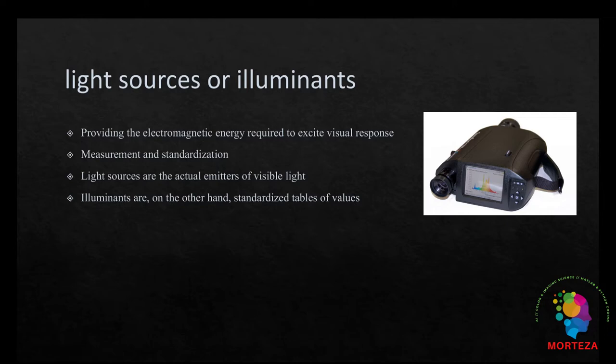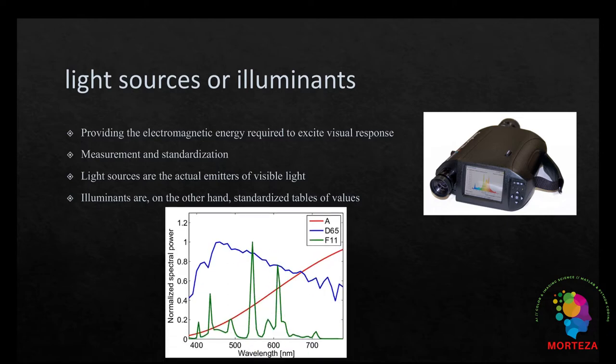And here are the spectral power distribution of D65, A, and F11 illuminants. So as you can see, this is the amount of energy that's being emitted by the light source versus wavelength.